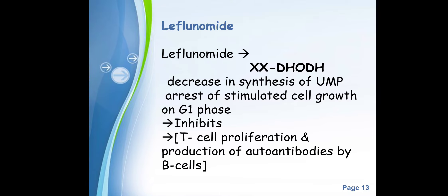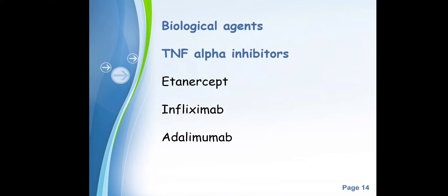Leflunomide inhibits DHODH — dihydroorotate dehydrogenase — and by inhibiting this enzyme, it decreases synthesis of UMP, ultimately inhibiting cell growth. In immune cells, it inhibits proliferation of T cells and production of autoimmune antibodies by B cells.